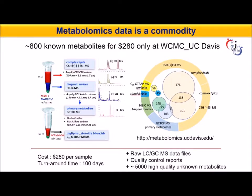To generate these datasets, each sample is analyzed with four assays using LC and GCMS, covering complex lipids, biogenic amines, primary metabolites, oxalipins, steroids, and bile acids.